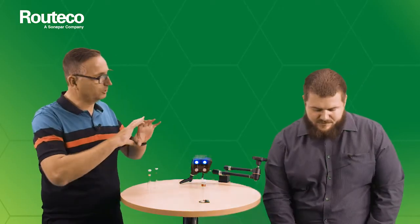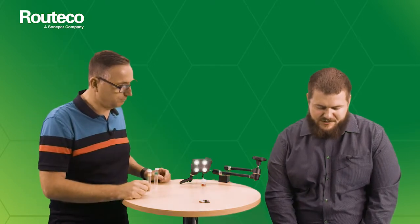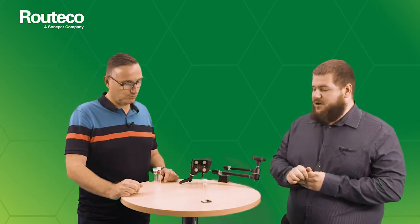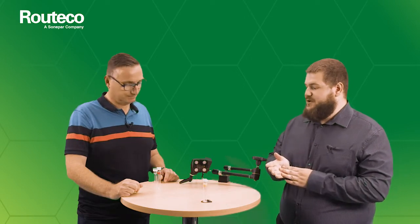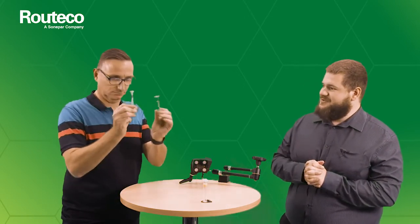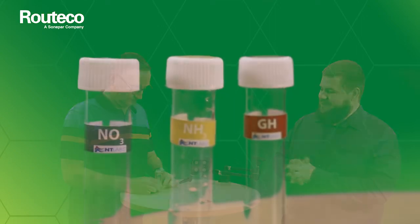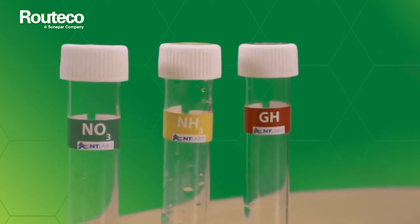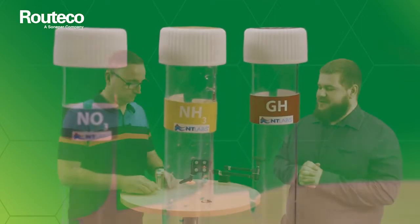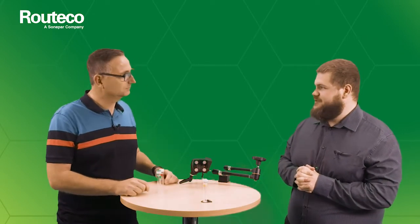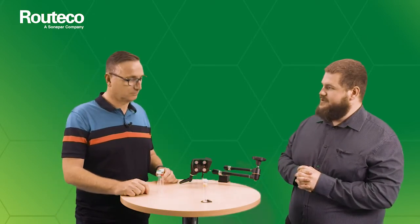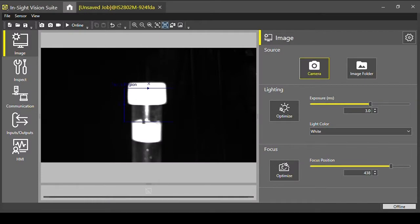And again, that will help on production lines where you've got different products with different colours going along. That's correct. We're going to quickly look at a live demo with some test tubes here. So I've got Darren, my glamorous assistant, to help with the test tubes. They've got different labels, different colours. And we're also going to show a test we can do to look whether the lid's in place and whether there could be a potential defect with the lid. So we'll jump straight into the software.